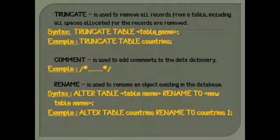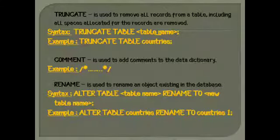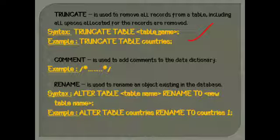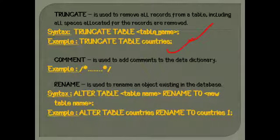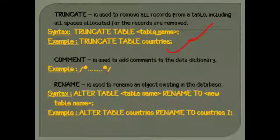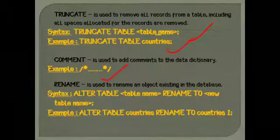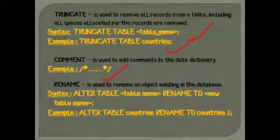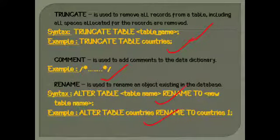Next is TRUNCATE, which is used to remove all records from a table including all spaces allocated for the records. This is the syntax and example for the TRUNCATE command. Next is the COMMENT command, which is used to add comments to the data dictionary — here is an example. Next is RENAME, which is used to rename an existing object in a database. This is the syntax and example for the RENAME command.